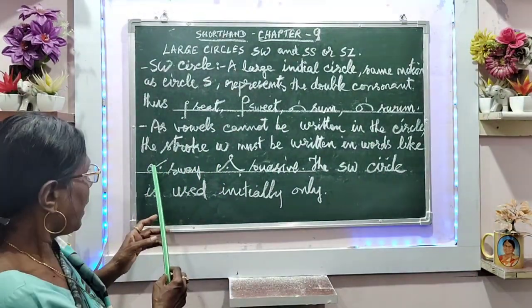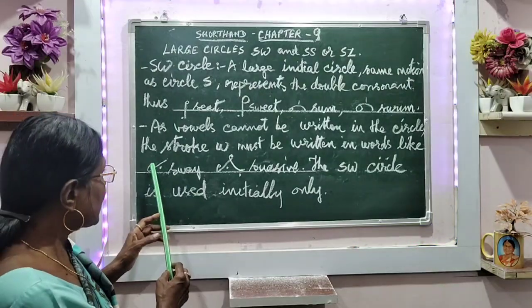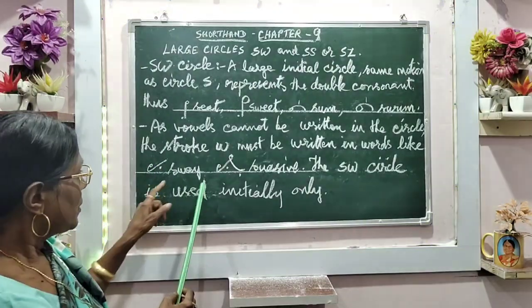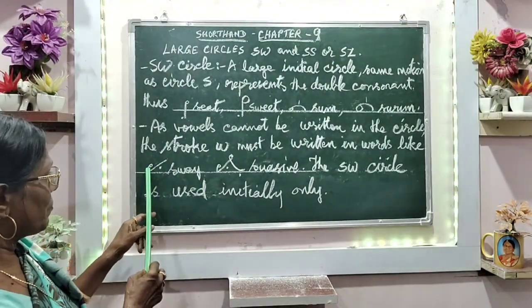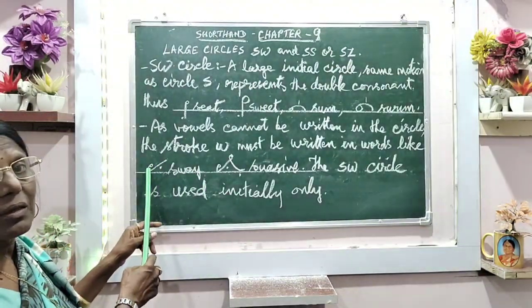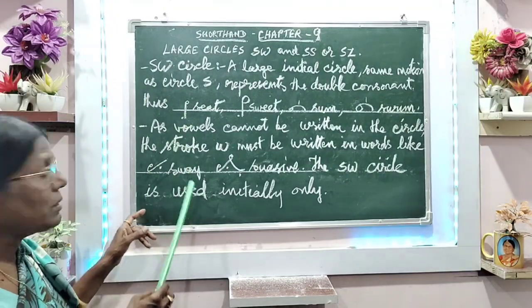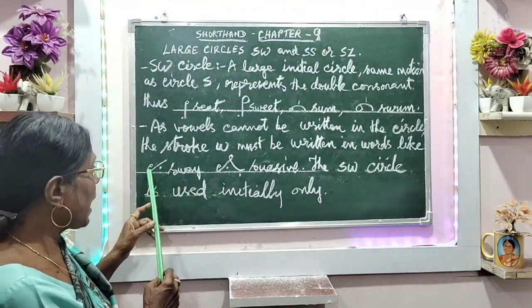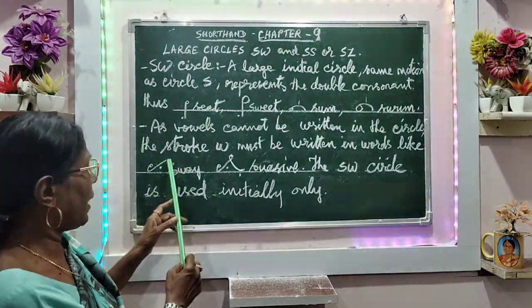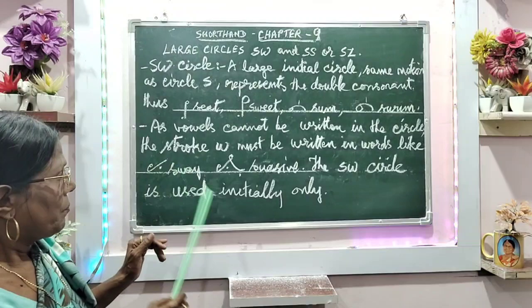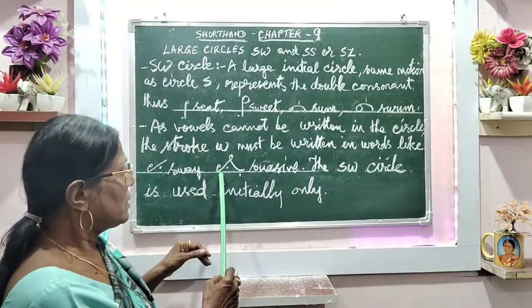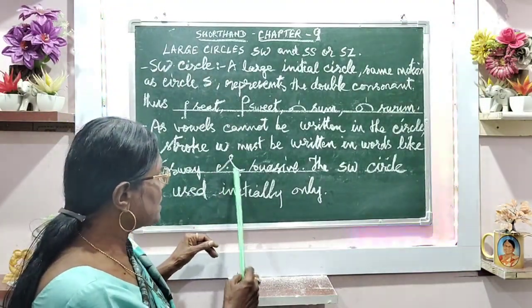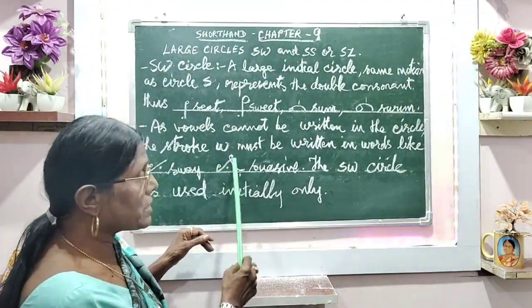See here — S circle and W separately gives 'sway.' The SW circle will not be given for this word; instead, we use S circle and W stroke. So for 'sway,' we write it as S circle and way.